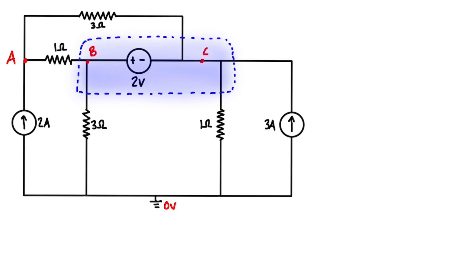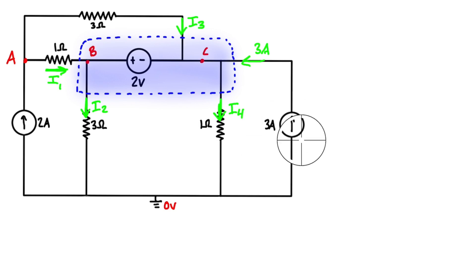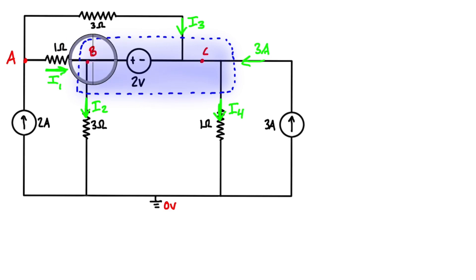Now we identify all the currents flowing into and out of the supernode. We have I1 flowing in, I2 flowing out, I3 coming in, and I4 going out. We also have 3 amps coming in from the independent current source. That's everything we need for KCL at the supernode. The supernode equation is just the relationship between B and C: C is two volts less than B, or B is two volts higher than C.